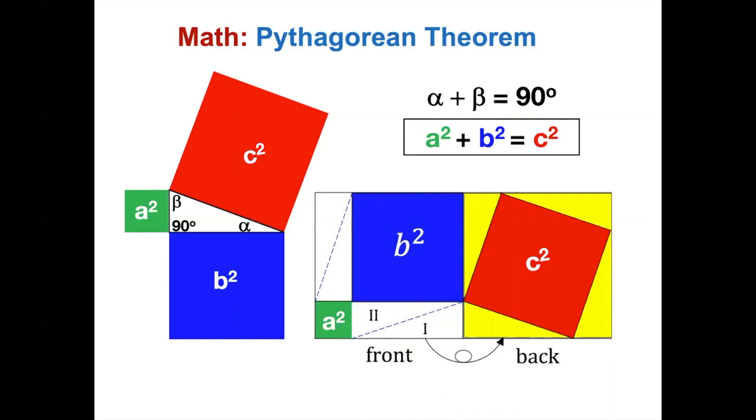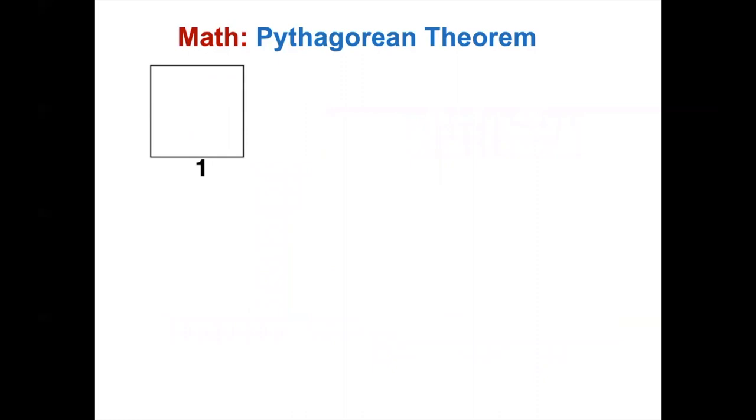Pythagorean theorem is very useful. Let's look at the square one. How long is the diagonal line? Look at the right triangle, in which both A and B are 1. So the C square is equal to 2. So then C is square root 2. Using the Pythagorean, we can calculate the third side of a right triangle.